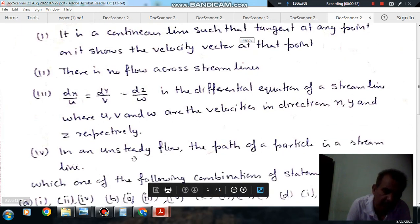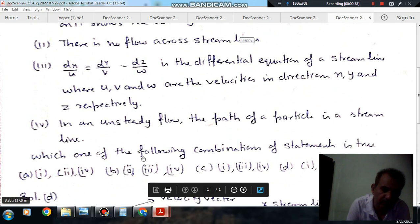Statement 4: In an unsteady flow, path of the particle is a streamline. Which one of the following combination of statements is true? Option a: 1, 2 and 4. Option b: 2, 3 and 4. Option c: 1, 3 and 4. Option d: 1, 2 and 4.